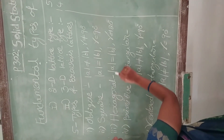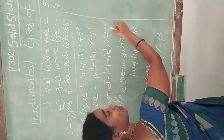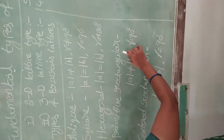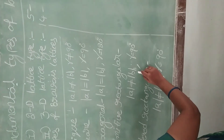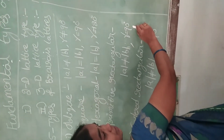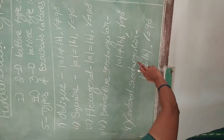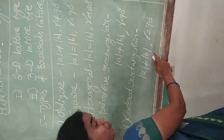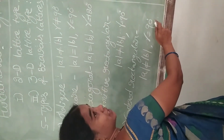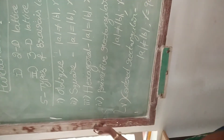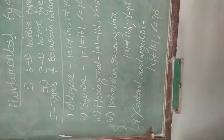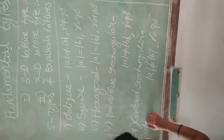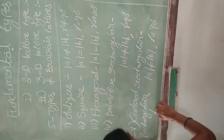Third one: hexagonal lattice. The condition is A is equal to B, and the angle gamma is equal to 120 degrees. Fourth one: primitive rectangular lattice. The condition is A is not equal to B, and gamma is equal to 90 degrees. The fourth and fifth ones have the same condition, so these two are also called simply rectangular lattices. Both are considered as rectangular lattices.